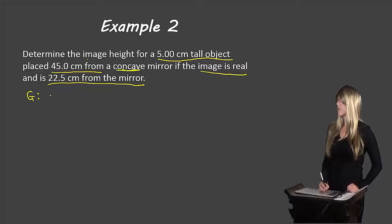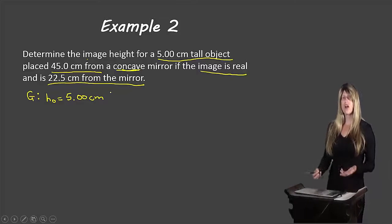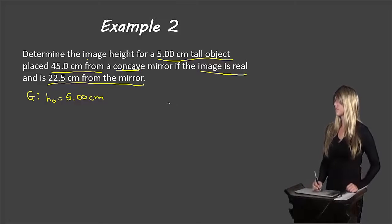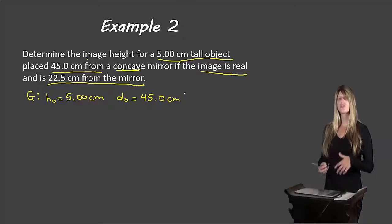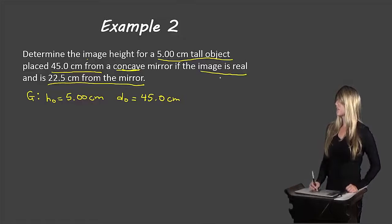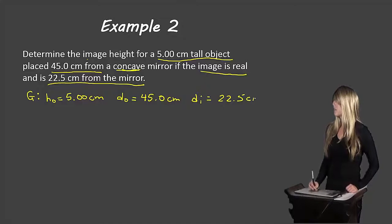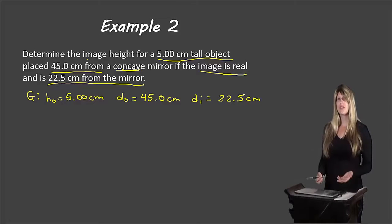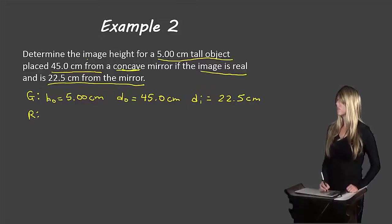Let's start with our given information. The original object has a height of 5.00 centimeters — positive because object heights are always positive based on our conventions. The object is placed 45.0 centimeters from the mirror — object distances are always positive. The image is real and 22.5 centimeters from the mirror, so DI is positive 22.5 centimeters because it is a real image. Required: we want to find HI, the image height.